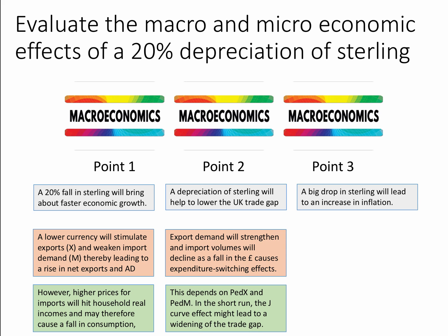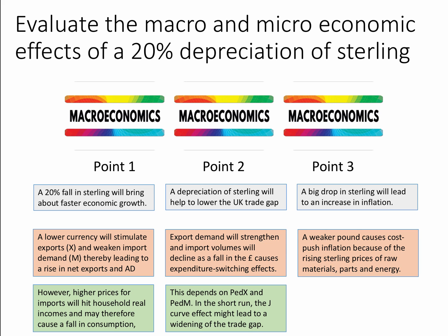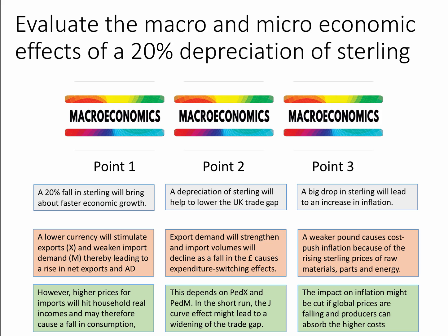Third macro point: a big drop in sterling — 20% is quite a significant depreciation — will lead to an increase in inflation. A weaker pound causes cost-push inflation because of the rising sterling price of raw materials, component parts, and energy such as oil and gas. You could use an analysis diagram showing an inward shift of short-run aggregate supply and the effect on inflation. However, the impact on inflation may be reduced if global prices are falling and if producers choose to absorb the higher costs rather than pass them on to consumers in the form of higher prices.